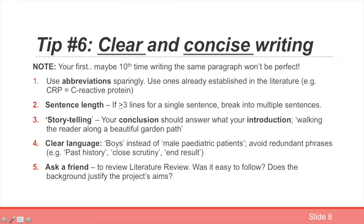As already discussed at length by Megan, these are some important points when writing your literature review. Think about abbreviations — use them sparingly, but if you use them make sure they're established in the literature. CRP, for example, most people in the clinical setting would understand to mean C-reactive protein. Don't be making up new abbreviations because it just confuses everyone.